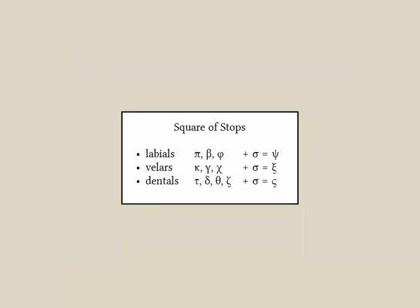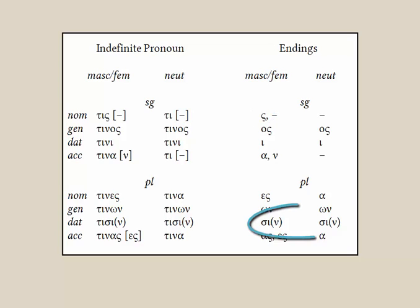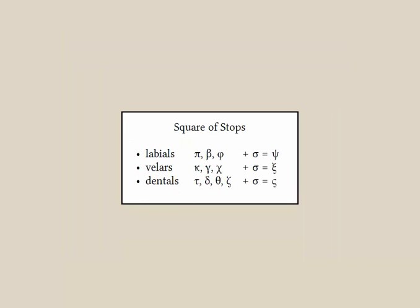Words in the first pattern have stems ending in one of the consonants in the square of stops. The square of stops is itself one of the twelve core patterns to learn thoroughly. One of the endings in the third declension is a sigma, which shows up in the nominative singular of some patterns and in the dative plural in all patterns. The square of stops shows us the changes that take place when a sigma is added to a stem ending in one of these letters.